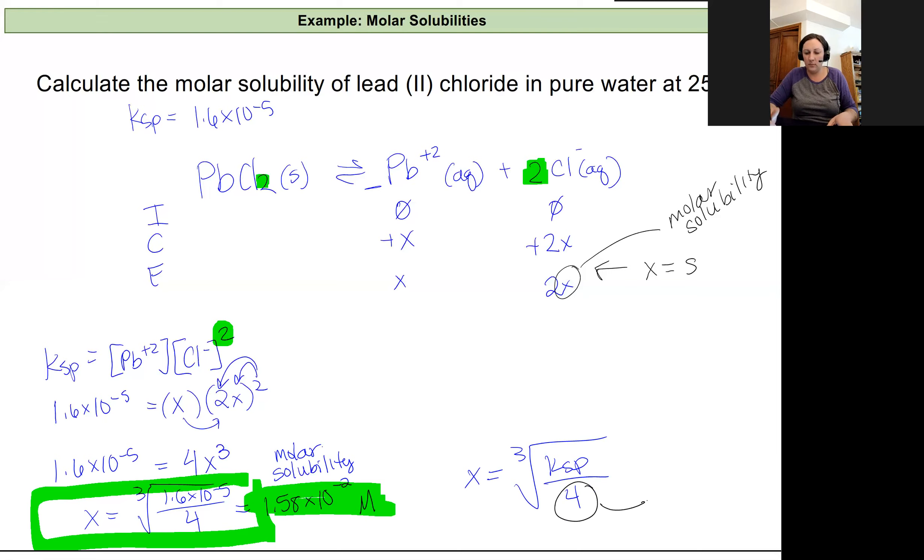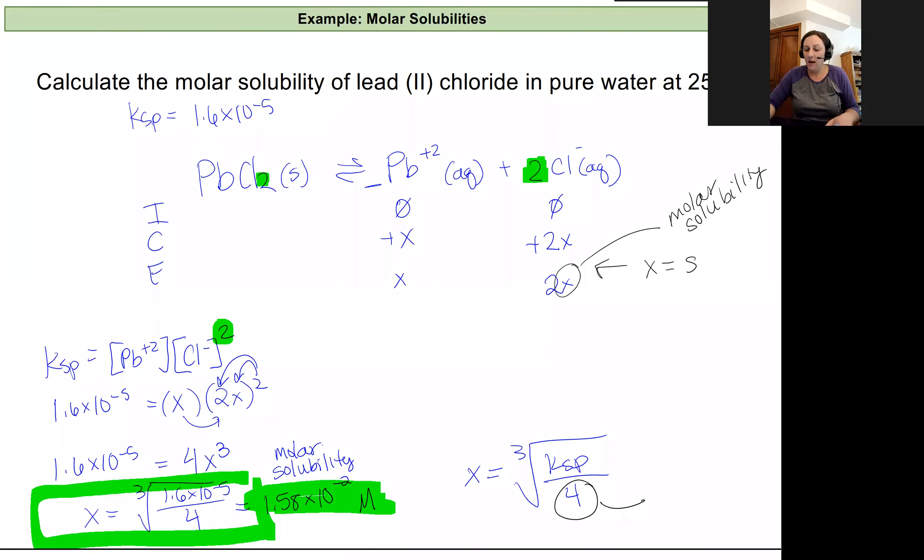That 4 is coming from our, we've got a 1 value here in front of our lead, and a 2 in front of our chloride. These are our coefficients. And so this is our 1 to the 1 power times our 2 to the 2 power. Or the way we wrote this in our expression before, and that equals 4, was n^n times m^m, where this 1 here is our n, and this 2 is our m. So they're coming from our coefficients.